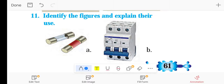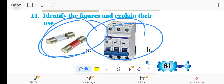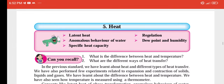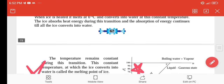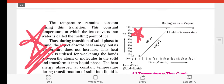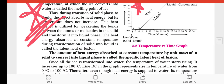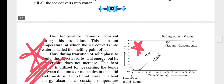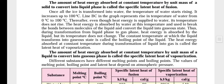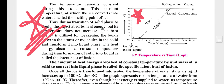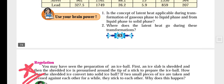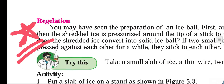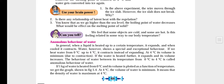In chapter number 5, Heat, we have page number 63, page number 63 — temperature graph 5.2. The temperature graph is important; it has been asked in the exam so this time you can expect it again. Regulations — definitely mark that as well.